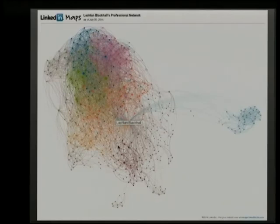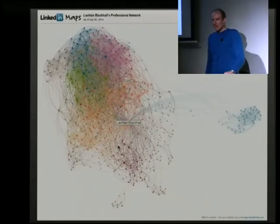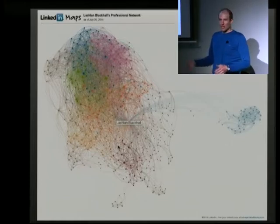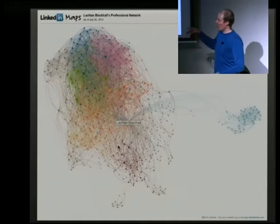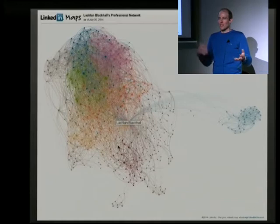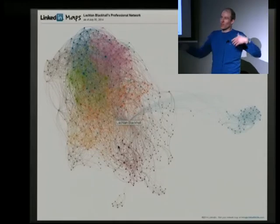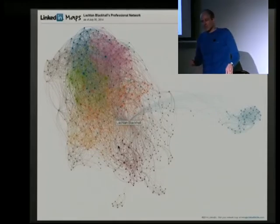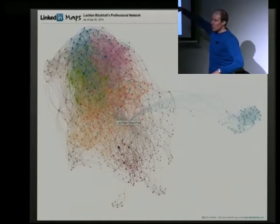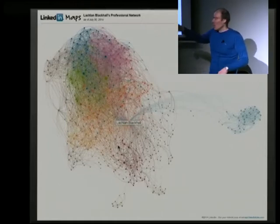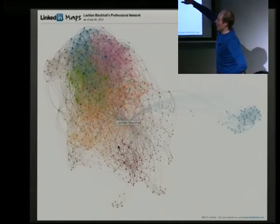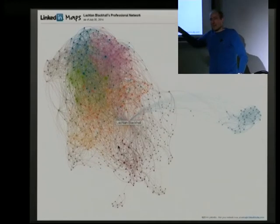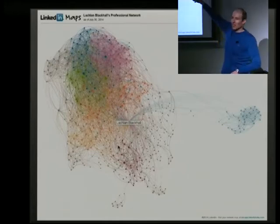I stumbled across this LinkedIn Labs tool that allowed you to visualise your social network on LinkedIn — unfortunately about to be taken down as of August first. It was really interesting because you always just tend to think of connections as point-to-point relationships, but there's all this structure that I didn't understand about the people in my own network. The colouring was done automatically — that green area actually represents my involvement in startups. It was really interesting to see the structure within that network, and then there's this random cluster of people with no relation to anybody else I know.